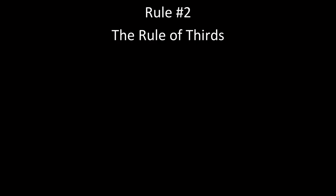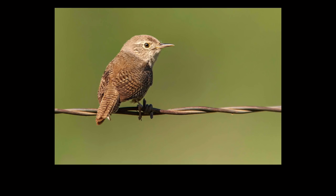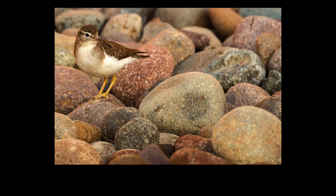Rule number two is the rule of thirds. Conventional wisdom is if you put the horizon on one of the horizontal lines, or if you put the bird on one of the vertical lines, or you put the action or the eye on one of the action points where the rule of thirds cross, you're going to have a nice, balanced composition. But it shouldn't be called the rule of thirds — it's a guideline. Here's a classic example: the barbed wire that the house wren is sitting on is at the bottom third, the bird is on the vertical left third, with lots of open space in front of the bird.